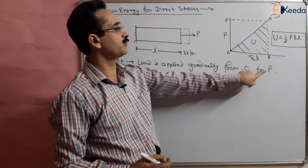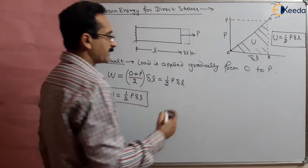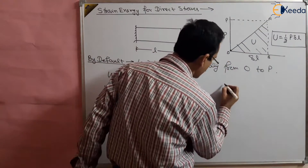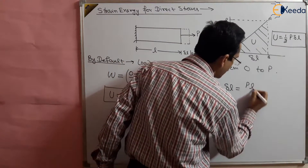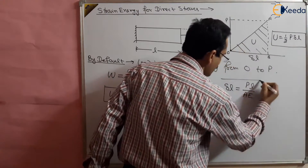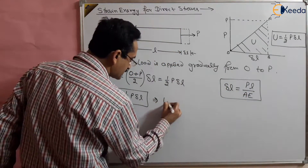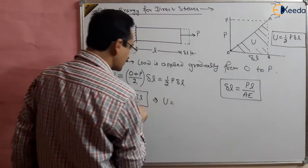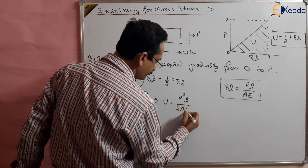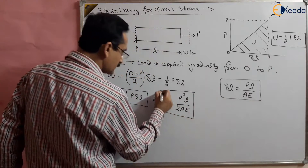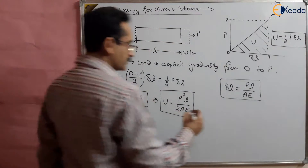So considering gradually applied load from zero to maximum P, the strain energy stored is U = half P delta L. From the first chapter we know that deformation delta L is given by PL upon AE. Substituting this value of delta L, we get U = P squared L upon 2AE. This is the strain energy stored in the material.